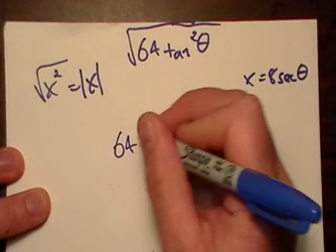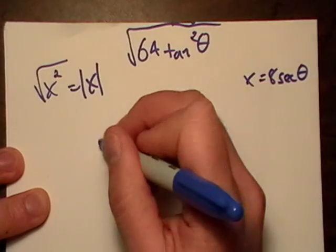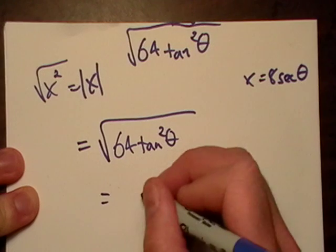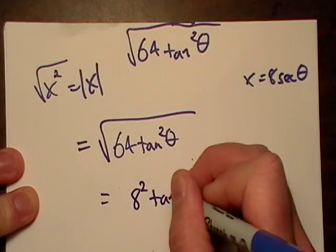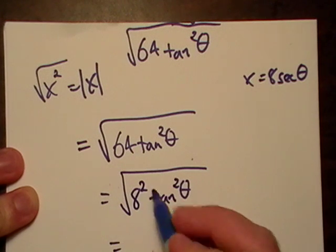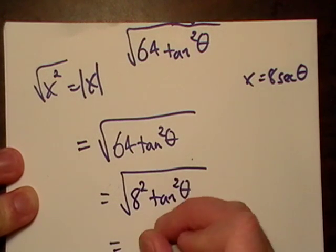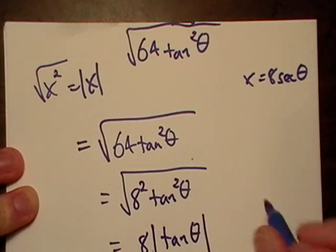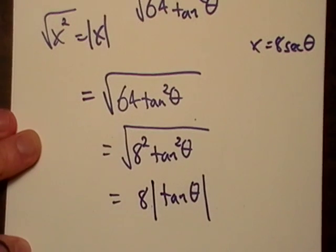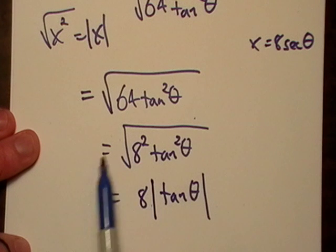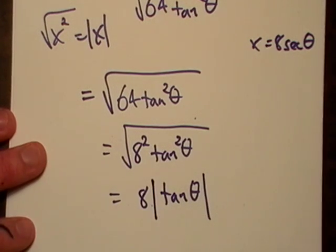So let's take 64, and this is going to be 8 squared. This is just going to be 8 times the absolute value of tangent theta, because remember, we take the square root of a square, they kind of cancel each other out. So that's how this thing goes.